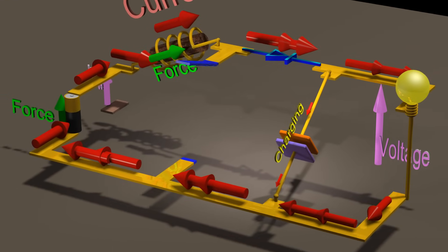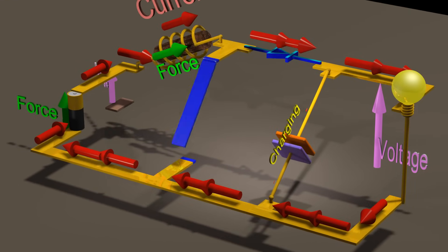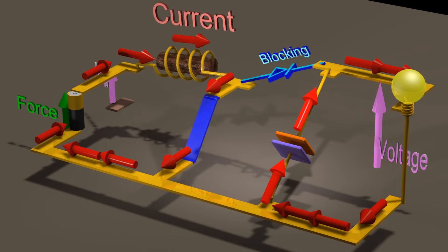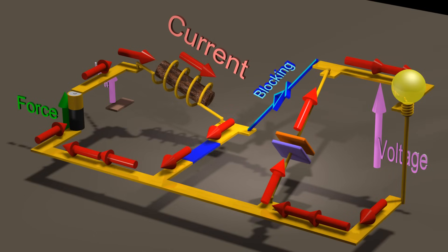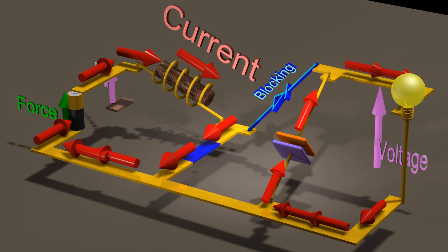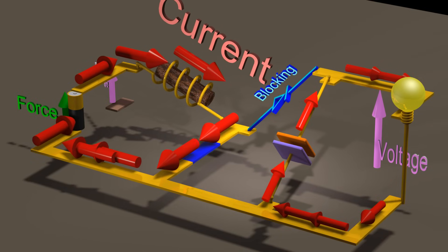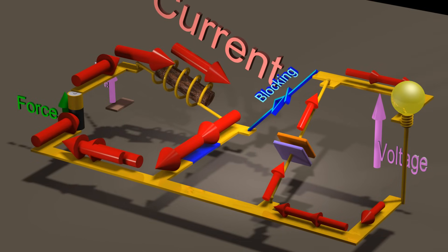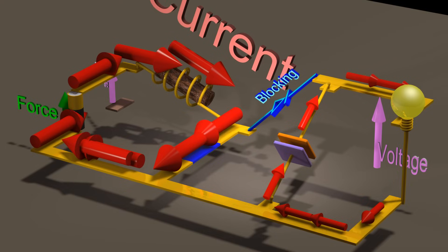We can control the value of the DC output voltage at the light bulb by controlling the percentage of time that this switch is on.